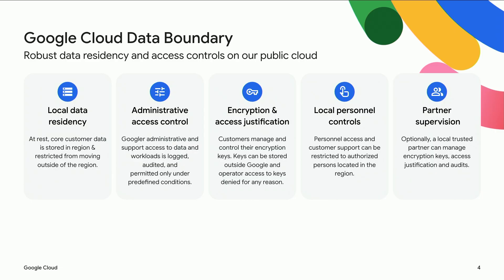Third, encryption and access justifications. Customers have the ability to manage their keys on or off Google Cloud to meet their security and compliance needs, and they can explicitly prevent access to their keys. Fourth, local personnel controls, which limit support personnel access to only those agents who have the right set of authorizations and location. And fifth, partner supervision. In locations including France, Germany, Italy, Spain, and the Kingdom of Saudi Arabia, local partners can provide external key management, access justification, and local support for their customers.